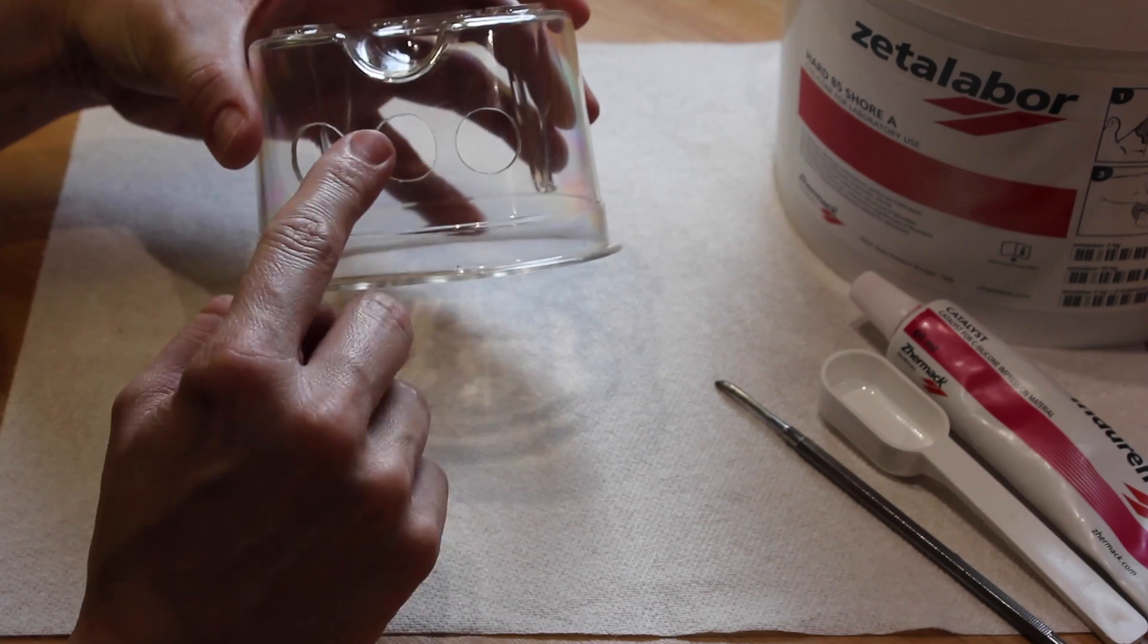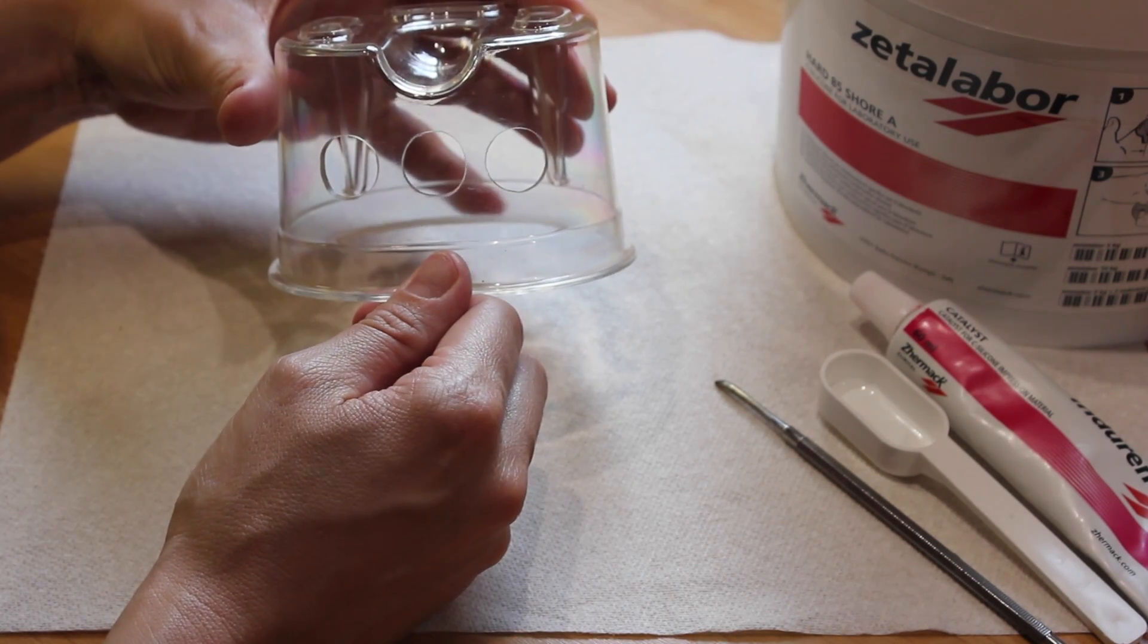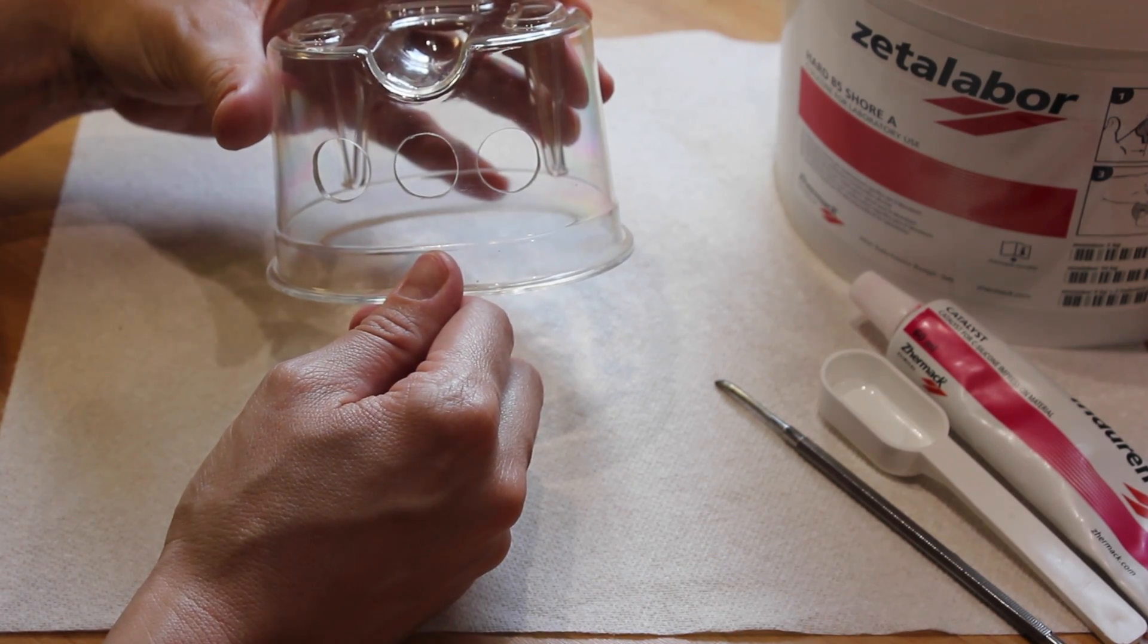So once the holes have been opened up and smoothed we can make a bung to cover all the holes while we're pouring in the silicone or the agar.